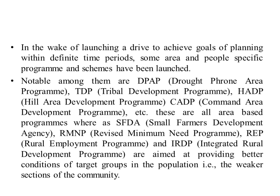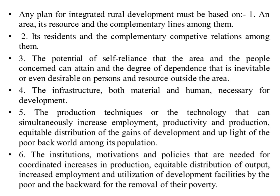Any plan for Integrated Rural Development must be based on: an area, its resources and the contemporary links among them; its residents and the complementary and competitive relations among them; the potential of self-reliance that the area and people can obtain; the degree of dependence on persons and resources outside the area; the infrastructure, both material and human, necessary for development; the production techniques or technology that can simultaneously increase employment, productivity and production; equitable distribution of the gains of development and uplift of the poor and backward among its population; and the institutions, motivations and policies needed for coordinated increases in production, equitable distribution of output, increased employment and utilization of development facilities by the poor and backward for the removal of their poverty.